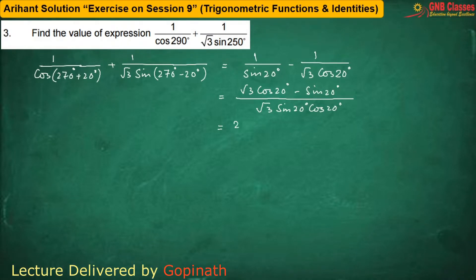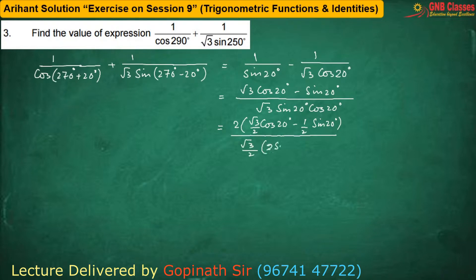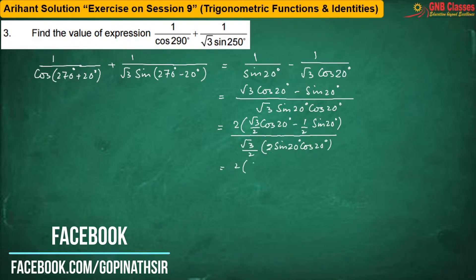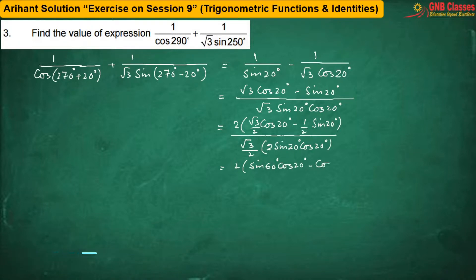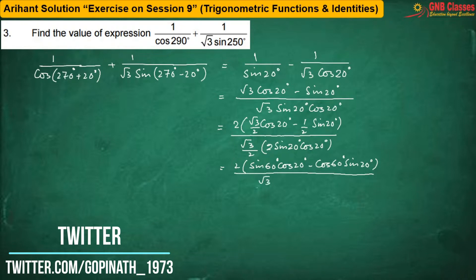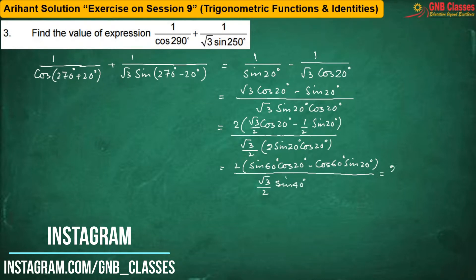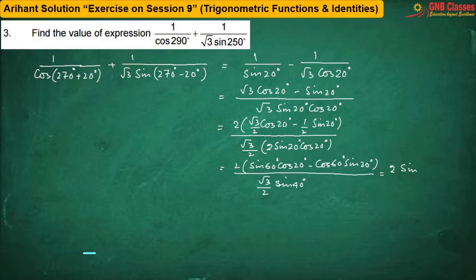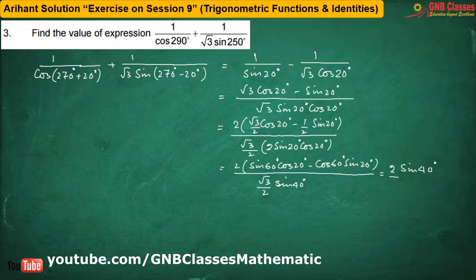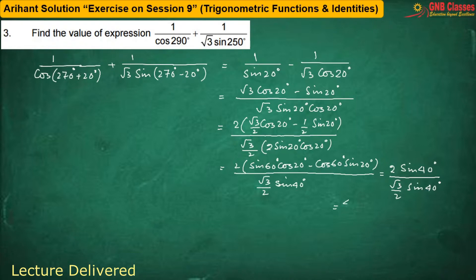Now I am replacing √3/2 by sin60° and 1/2 by cos60°. In the denominator, we are getting (√3/2)·sin40°. So in the numerator we are having sin(60° − 20°), that is sin40°, divided by (√3/2)·sin40°. Therefore, the final answer is 4/√3.